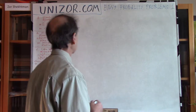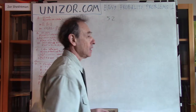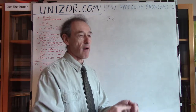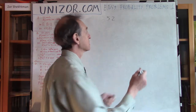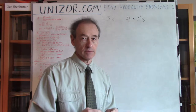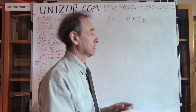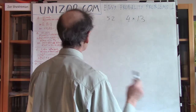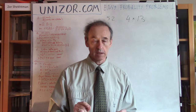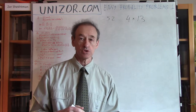You have a standard deck of 52 cards. This deck contains four different suits: spades, hearts, diamonds, and clubs. Each one has 13 different ranks: 2, 3, 4, 5, 6, 7, 8, 9, 10, Jack, Queen, King, and Ace. You randomly pick two cards from this deck. The problem is: what's the probability of picking two spades?